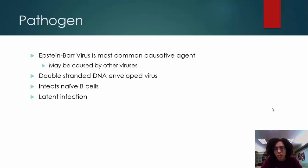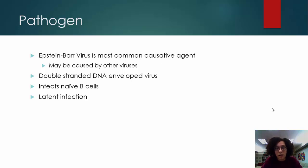Mononucleosis can actually be caused by several viruses, including HIV and a virus that is also in the herpes family. However, Epstein-Barr virus is the most common causative agent for it. Epstein-Barr virus is part of the herpes family, and it is a double-stranded DNA virus which is enveloped, and it causes a latent infection.